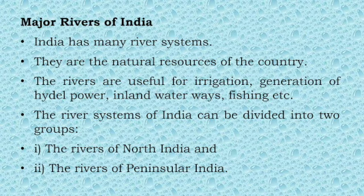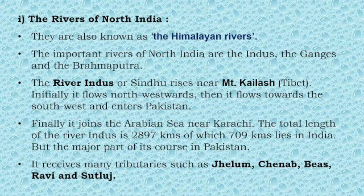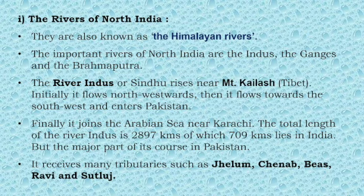Major rivers of India. India has many river systems. They are the natural resources of the country. The rivers are useful for irrigation, providing water for agriculture, generation of hydroelectricity, and inland waterways - they also help in travelling from one place to another. The river systems of India can be divided into two groups: Rivers of North India and Rivers of Peninsular India. Rivers of North India are also known as the Himalayan rivers. The important rivers are the Indus, the Ganges and the Brahmaputra.